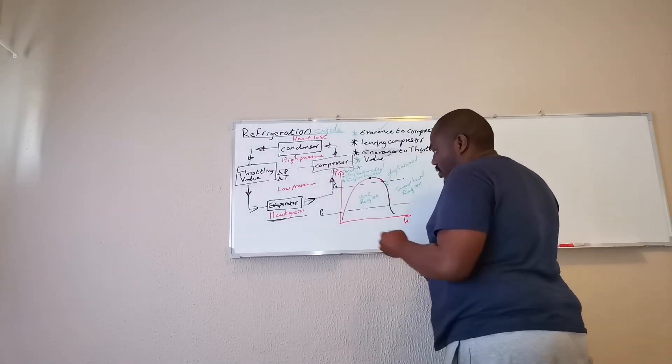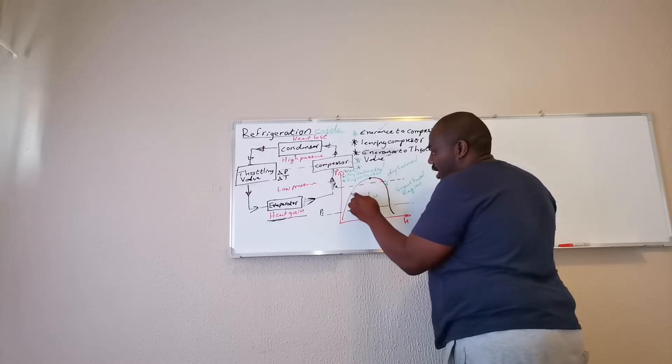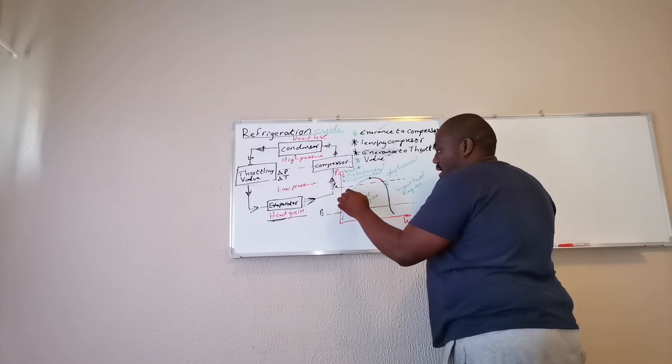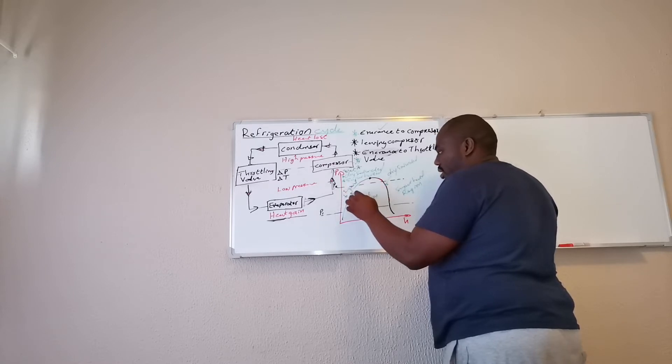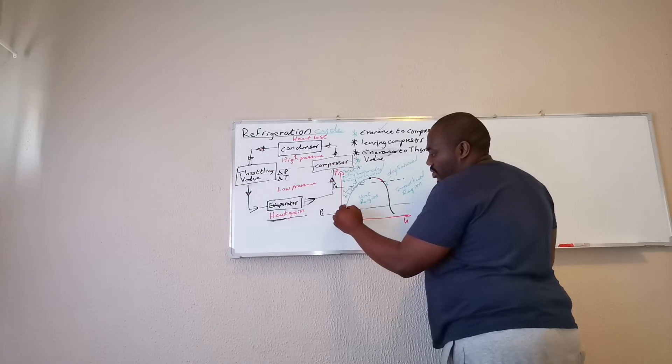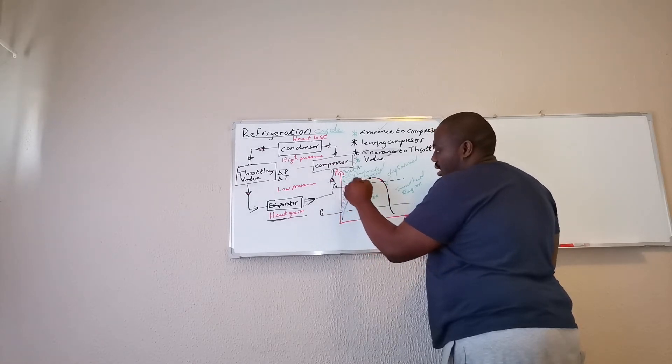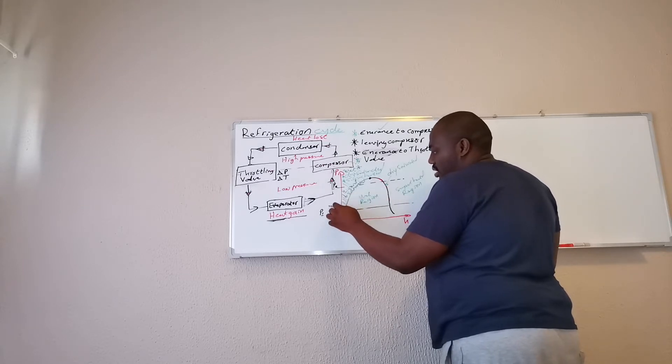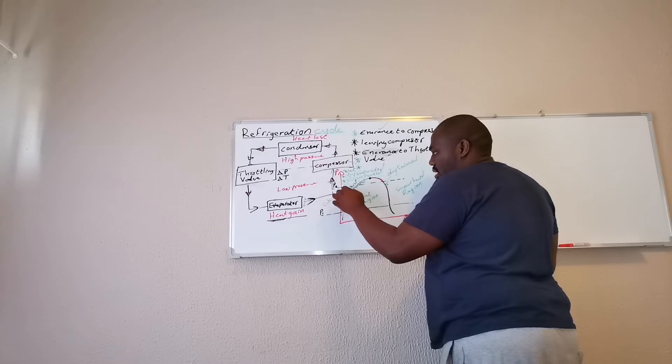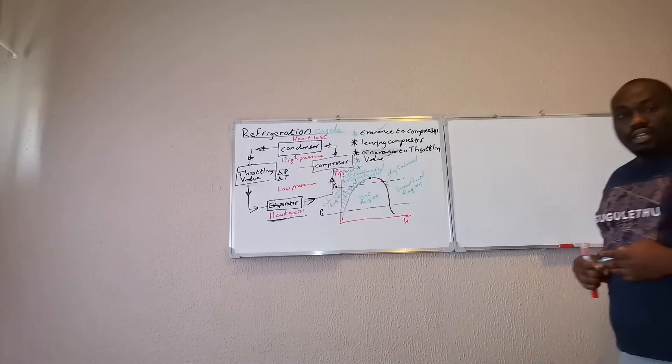And then on this side of the curve, everything that lies on this curve line, this would be liquid saturated. And on this side of the curve, this area here, that area there we say is the sub-cooled region.